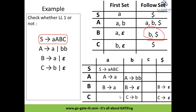Now we check whether any multiple entries appear in any column. Multiple entries means two or more productions for the same non-terminal under the same terminal symbol. In this case we don't have any multiple entries in any column, so we can directly say this is LL1 grammar. We have discussed the first set calculation, follow set calculation, and LL1 parsing table construction. I strongly suggest following the video based on the syntax analysis phase.